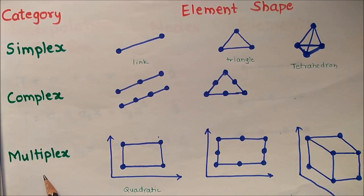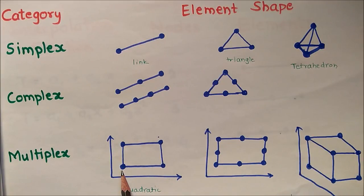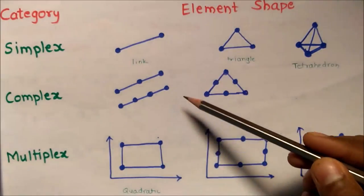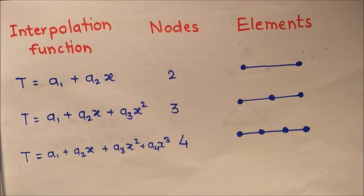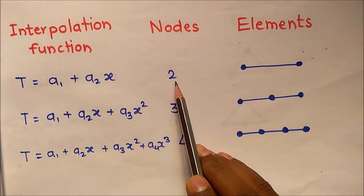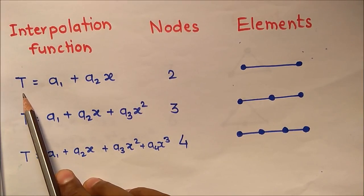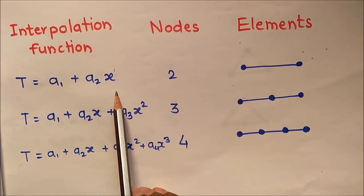Quadrilateral and hexahedral elements are always considered multiplex elements. A key property of multiplex elements is that their edges must be parallel to the x and y axes. For 1D simplex elements, the link element has two corner nodes, and the interpolation function is T = a1 + a2·x — a degree-1 linear equation. This linear interpolation function defines the simplex element.